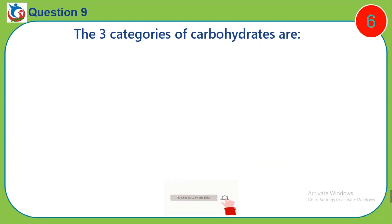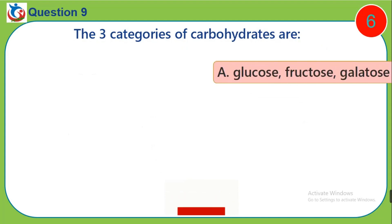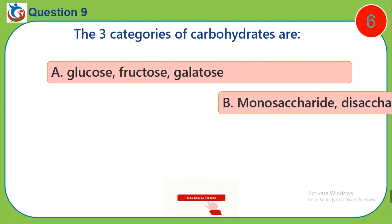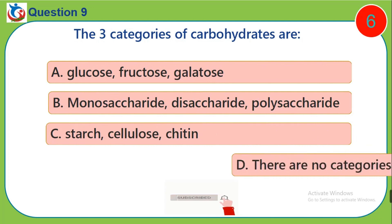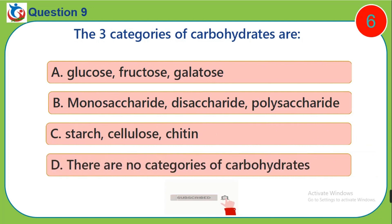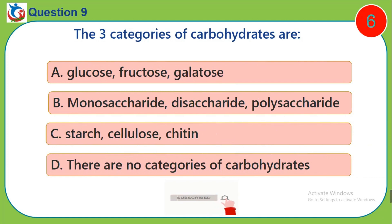Question 9. The 3 categories of carbohydrates are: A. Glucose, Fructose, Galactose. B. Monosaccharide, Disaccharide, Polysaccharide. C. Starch, Cellulose, Chitin. D. There are no categories of carbohydrates.